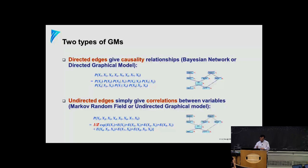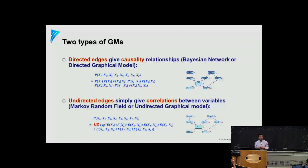Just to recall: in the directed graphical models, we have edges connecting nodes, and the edges have directionality, which intuitively leads to a factorization law — a product of a traversal over the graph. Whenever you hit a node, you define either a marginal probability or a conditional probability of that node given its parents, and then you multiply them together. This equation shows you exactly how that can be done.